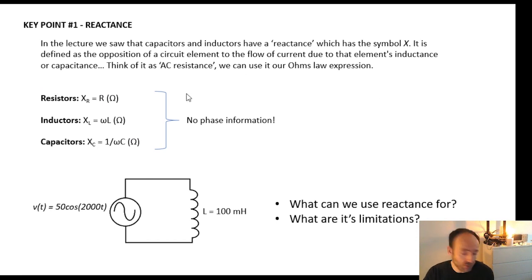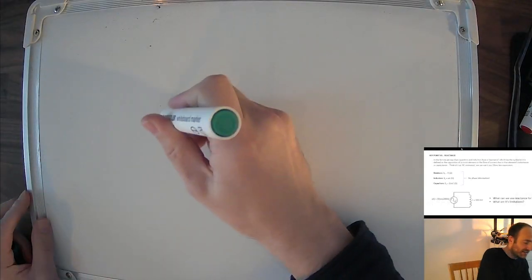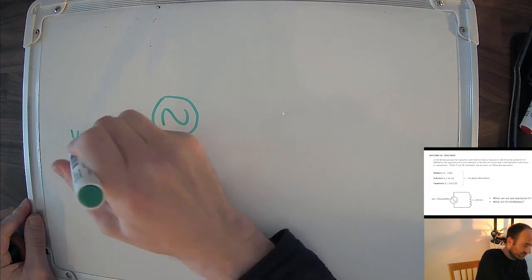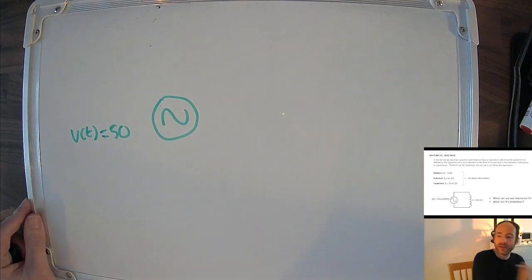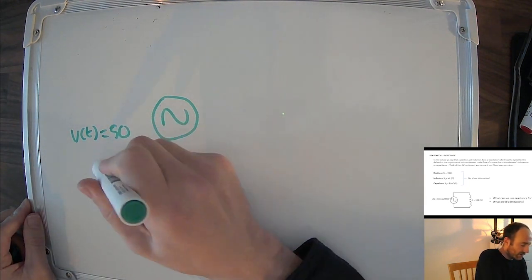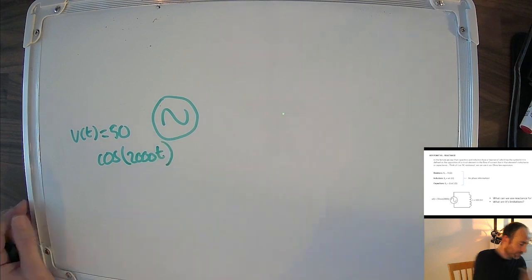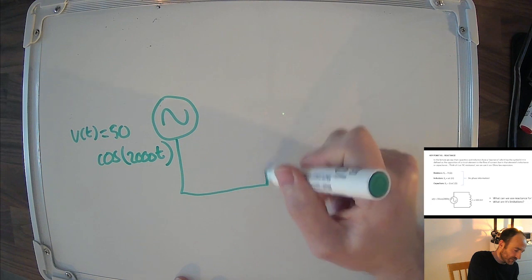Now I'm going to go over to the board and look at a really simple circuit to talk about what we can use reactance for and its limitations. We have an AC source with voltage v(t) = 50 cos(2000t), and connected to it is an inductor where L = 100 millihenries.